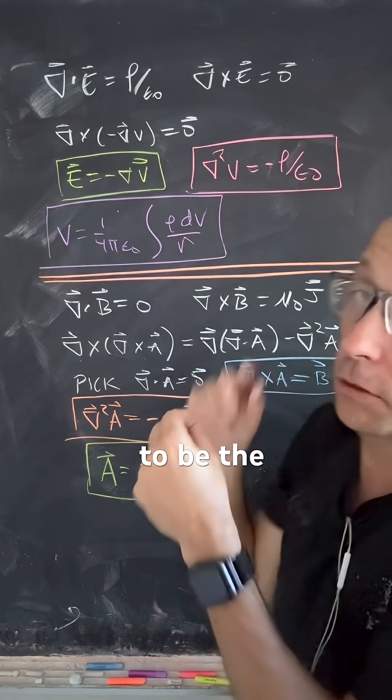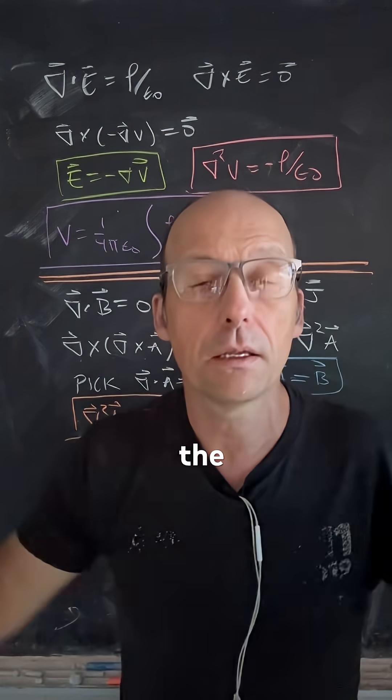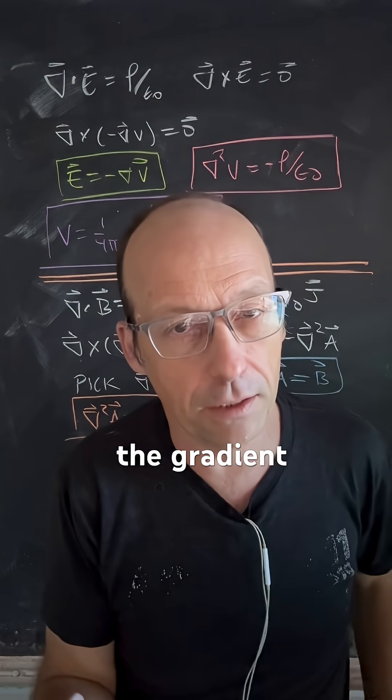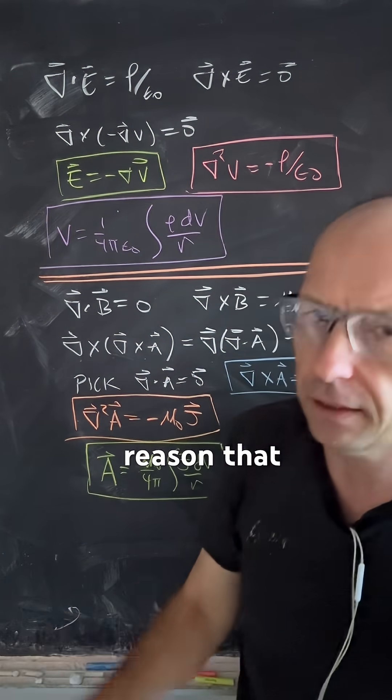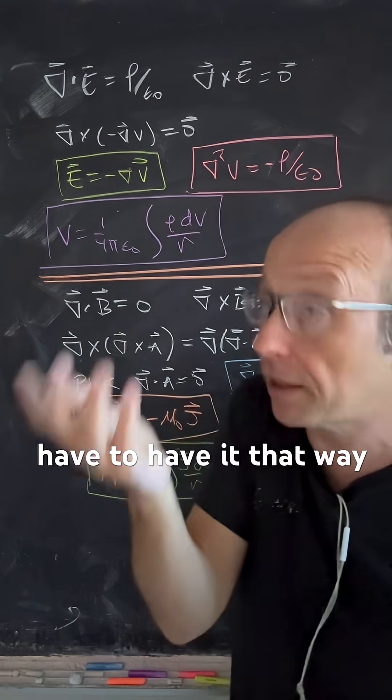And from that, we can define the electric field to be the negative the gradient of the potential. And the negative is there for a reason that doesn't always make sense, but you don't have to have it that way, but we do.